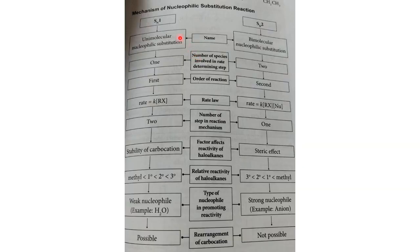Before the mechanisms, there are two types: SN1 (unimolecular nucleophilic substitution) and SN2 (bimolecular nucleophilic substitution). SN1 involves a two-step mechanism, is a first-order reaction (rate depends only on concentration of haloalkane), prefers tertiary haloalkane, involves weak nucleophiles such as water, and rearrangement may occur. The stability of the carbocation is key.